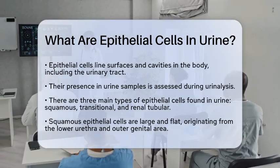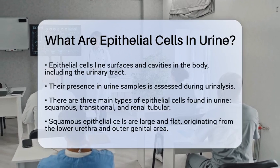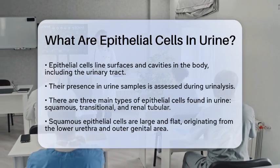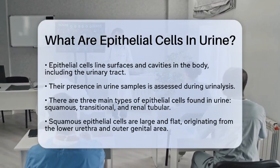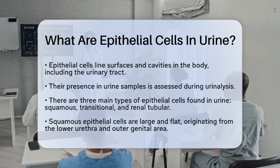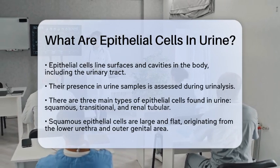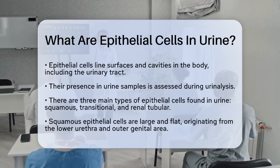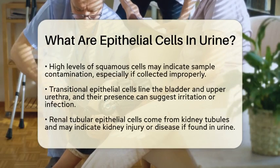There are three main types of epithelial cells that can show up in urine. First, we have squamous epithelial cells. These are large and flat cells that come from the lower part of the urethra and the outer genital area. If you see these in a urine sample, it might suggest that the sample was contaminated, especially if it wasn't collected using a clean technique.